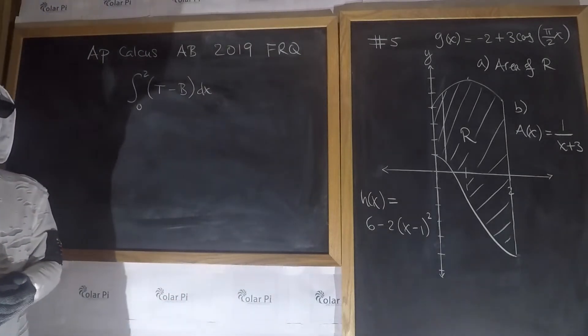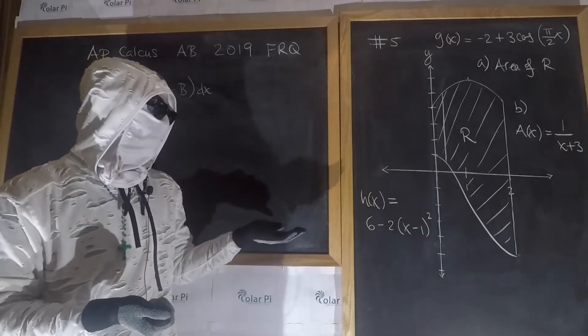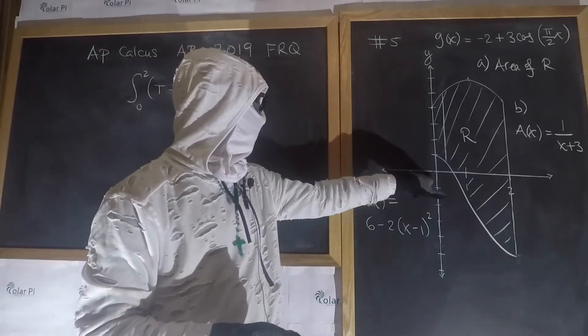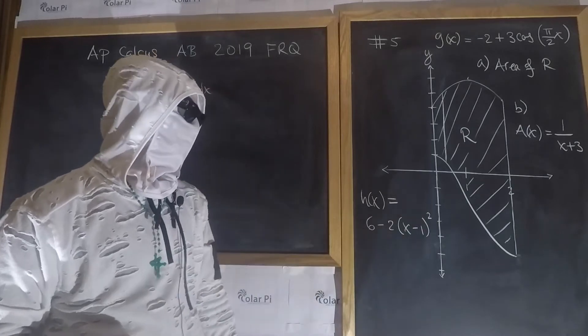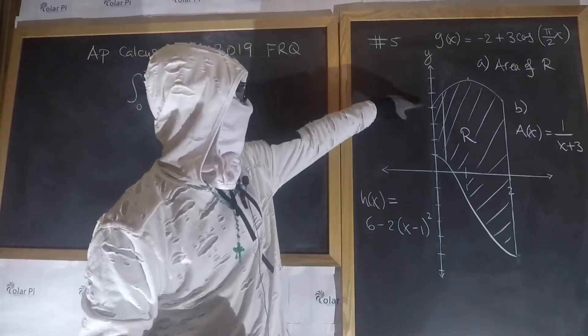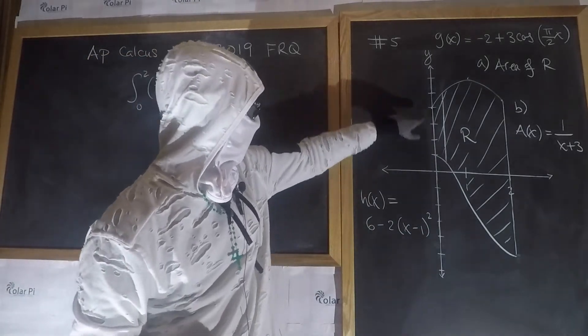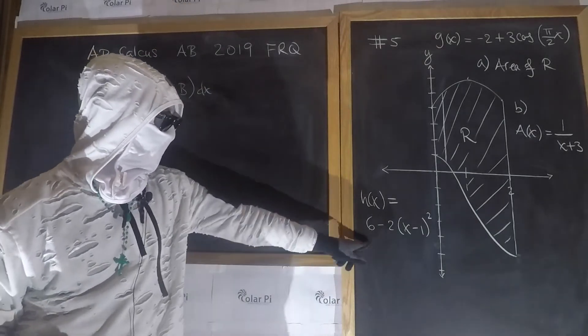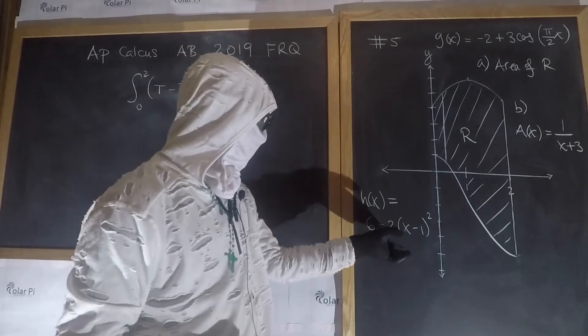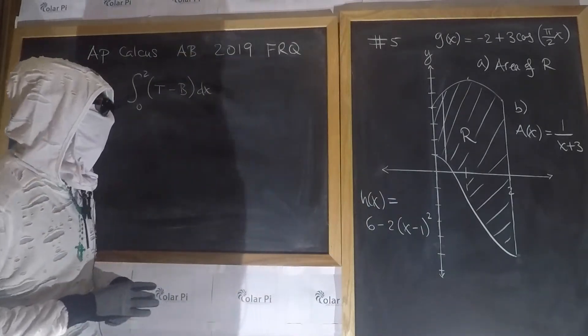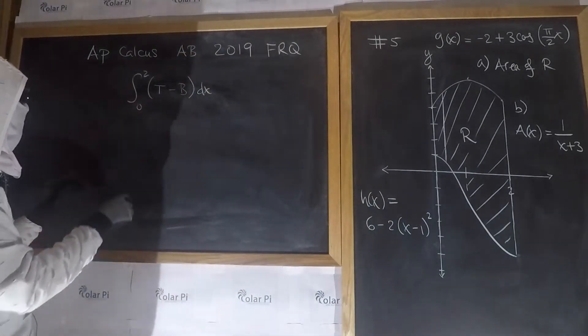Now, it's important to determine which function is on top. For x equals 0, if I plug in x equals 0 here, I get 6 minus 4, which is 4. So that's the y-intercept for this function, and therefore I know that the quadratic is on top. The top function is the quadratic.